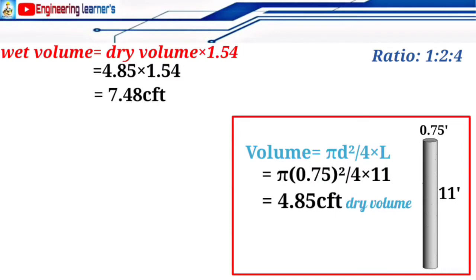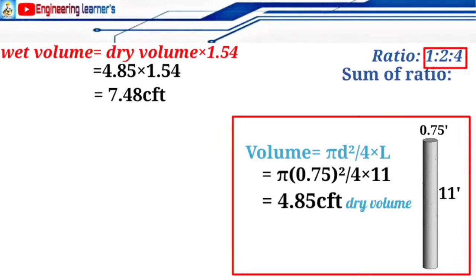So we get 7.48 cubic feet as the wet volume. Now we will find the cement, sand, and aggregate from this wet volume. The concrete ratio is 1:2:4. Adding all parts: 1 + 2 + 4 = 7, so the sum-up ratio is 7.